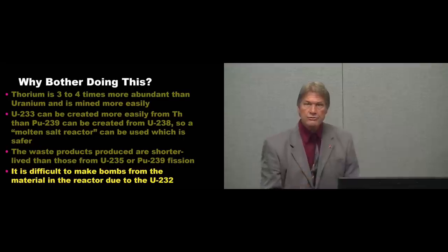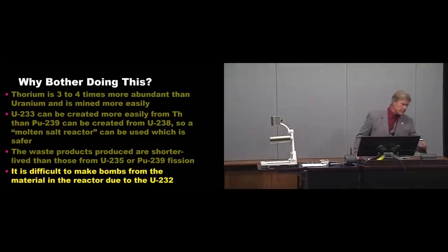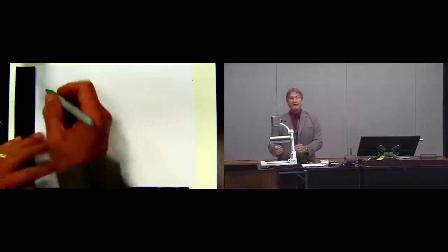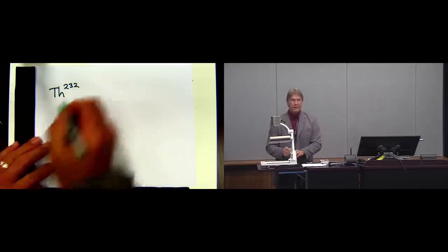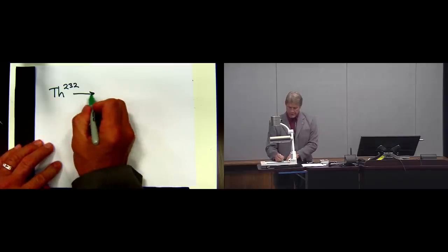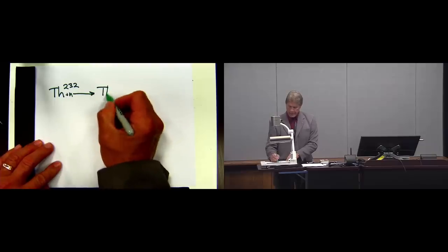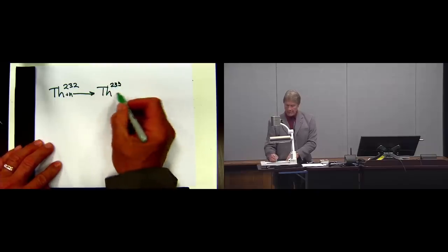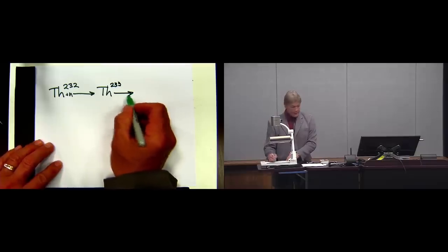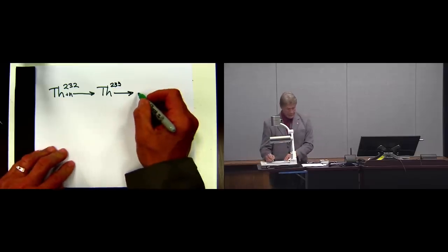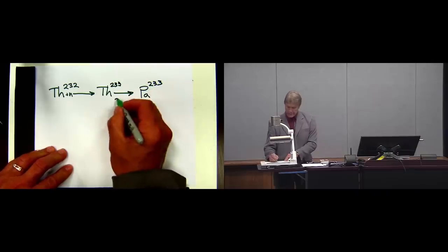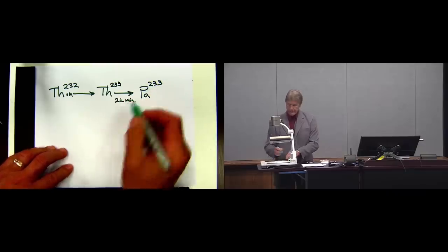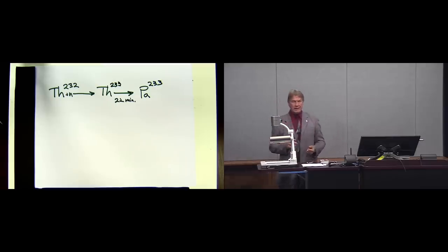And the last thing of why to bother doing this is that it's difficult to make bombs from the material in the reactor due to this U-232. I think I can best explain that over on a document camera. I don't have my squeaky markers, so this is the best I can do. I'm going to start with thorium-232, naturally abundant thorium. I put it in the nuclear reactor, I add neutrons to it, and I make thorium-233. And it will decay very quickly, 22 minutes, and it makes protactinium-233.